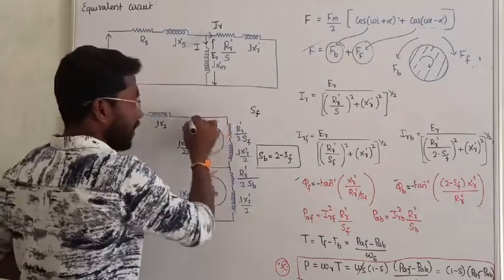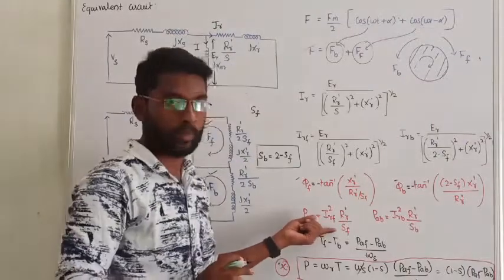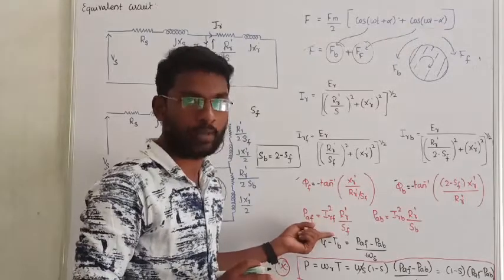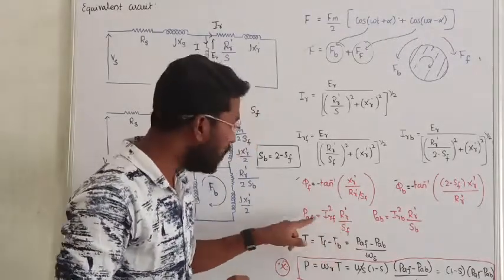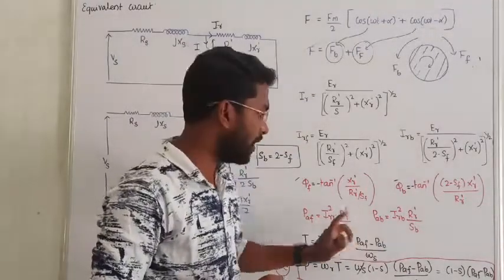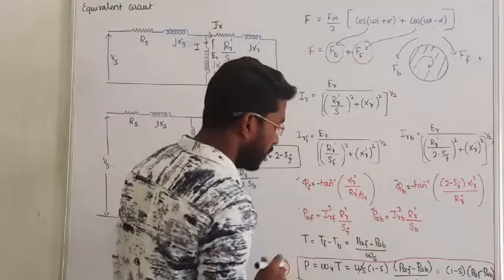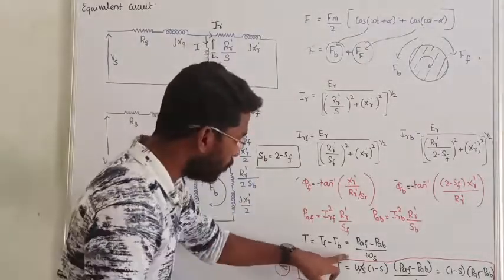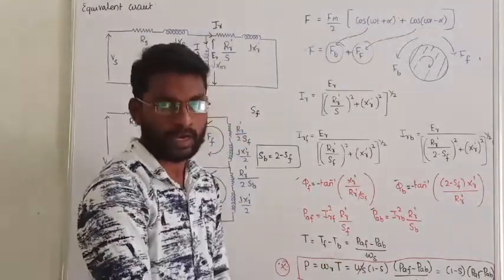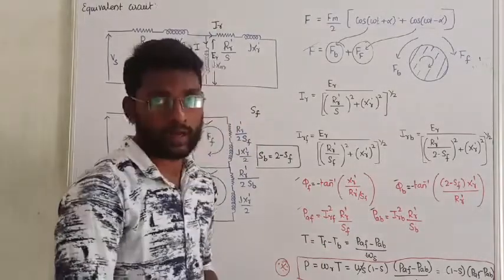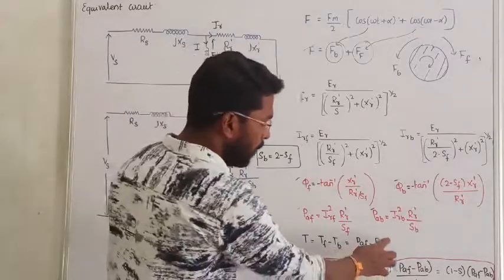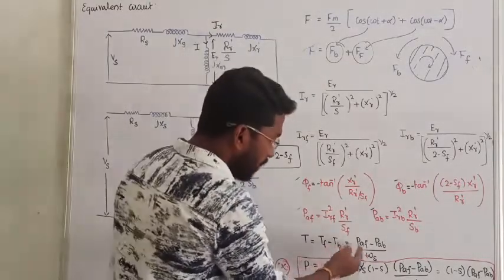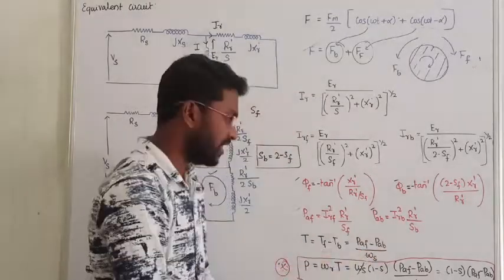In the forward direction, we calculate the air gap power developed due to forward MMF, and the air gap power due to backward MMF. The air gap power formula is I squared times R by S - this is the general formula for the three phase induction motor. For forward air gap power, we use rotor current squared times rotor resistance divided by forward slip. For backward air gap power, we use the same resistance divided by backward slip. Both torques oppose each other, so the resultant torque is T_F minus T_B. T equals P divided by omega_S. Net torque equals forward power minus backward power, divided by synchronous speed.